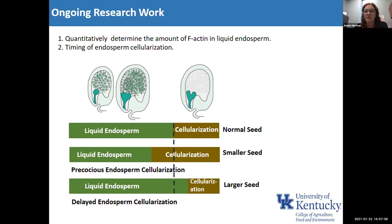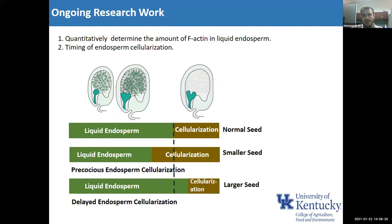Another question: how are you able to see inside the seed using confocal microscopy — is the seed fairly transparent? No, seeds are not transparent. I'm using fluorescent proteins — LifeAct fused to eGFP for F-actin and RFP (red fluorescent protein) for nuclei. Since these proteins are already expressed inside the seeds, I collect seeds in media and check them with confocal microscopy, using a laser to observe the fluorescence.